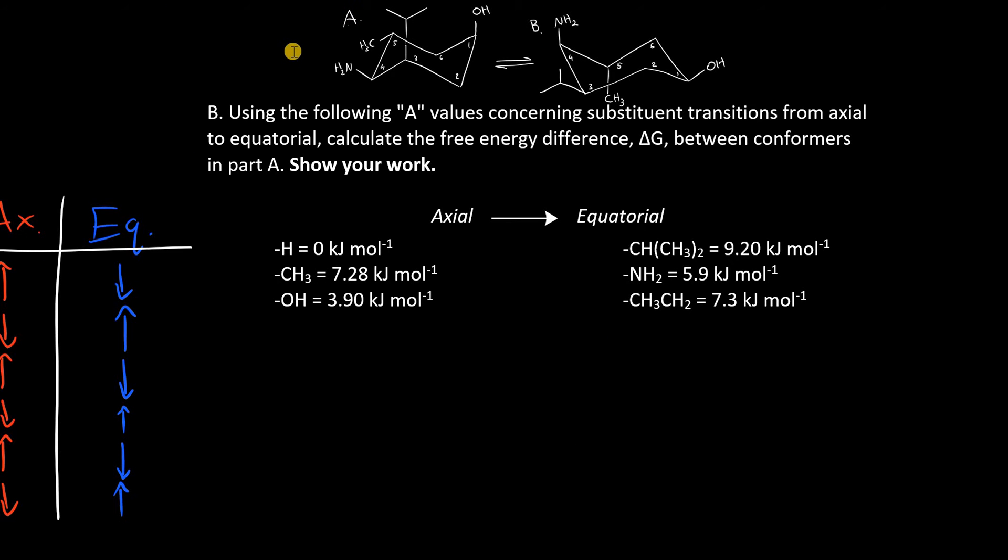So now in part B we're asked to use the following A values, which are all delta G values, to calculate the difference in free energy between these two conformers. So I purposely chose this example because I have four substituents. In conformer A I have two axial, two equatorial, and it's the same thing in conformer B. So the real question is which one is better in terms of energy? Because whichever one releases energy, whether transferring from A to B or going from B to A, whichever one releases energy will be the more stable conformer.